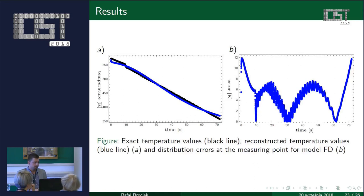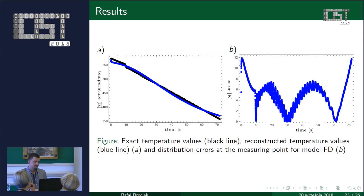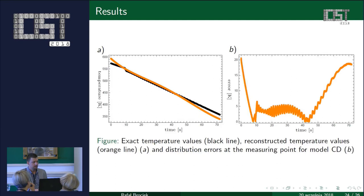Looking at the figures: on the left, the black line is the measurements from the real object and the blue line is the calculated values modeled by the model with fractional derivative. On the right side we have the errors of modeling. The blue line fits very well to the black line. In the case of classical derivative it is a little bit worse, especially at the end of the process above 60 seconds.